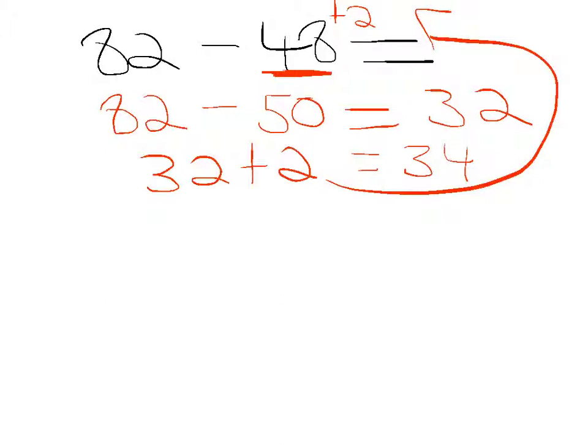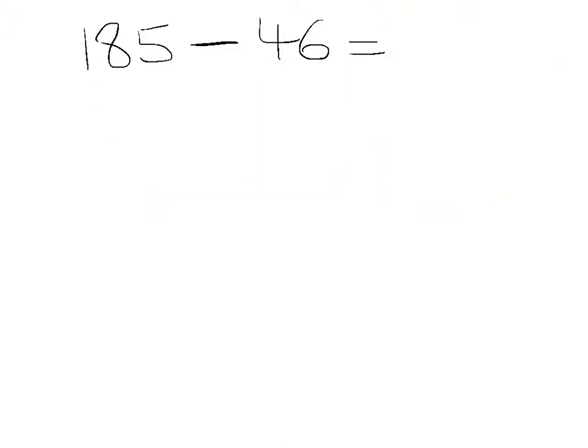Let's try one more example so that you can see. This one here, 185 minus 46. So we're going to change it to 185 minus 50. So with this one here, take a moment to think about how much you've added to the 46. It's 4. So we'll just add that little 4 there, and 185 minus 50 is 135.